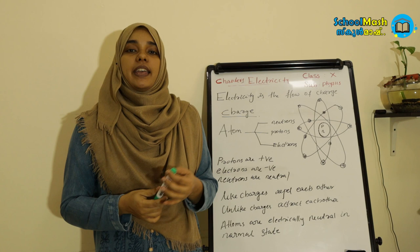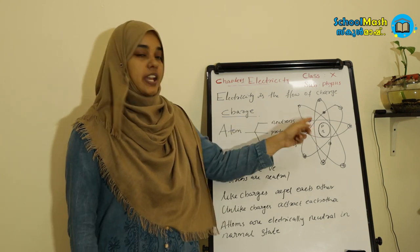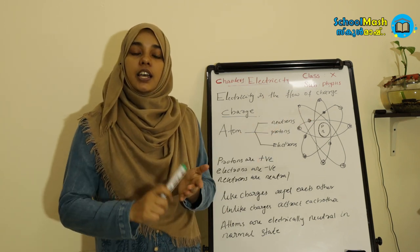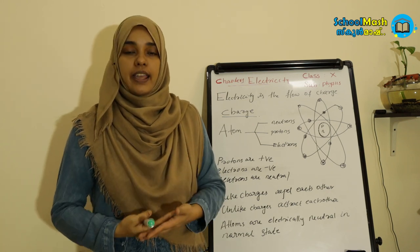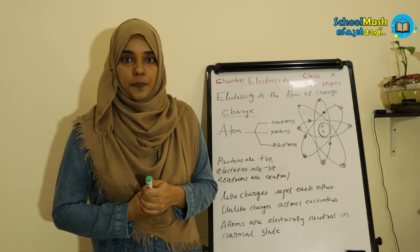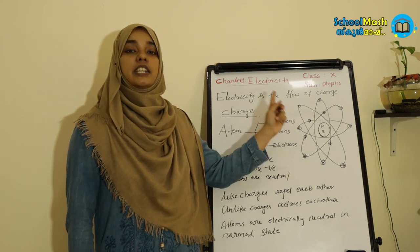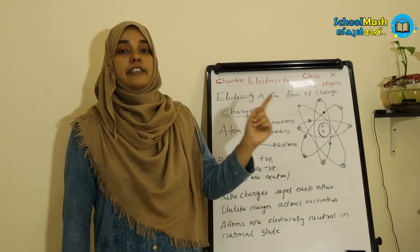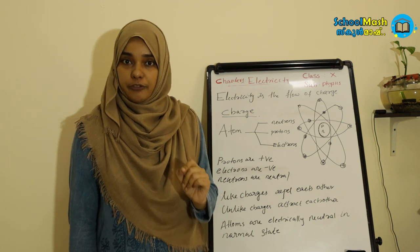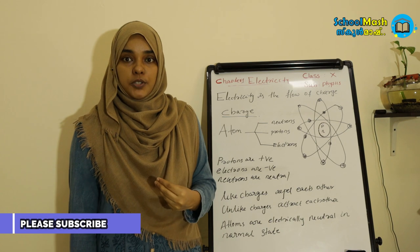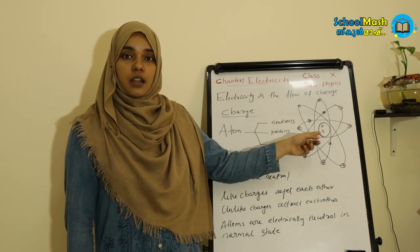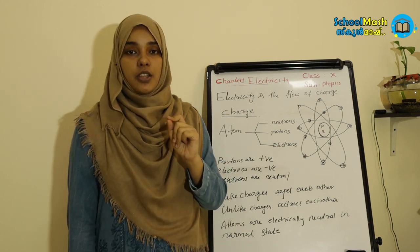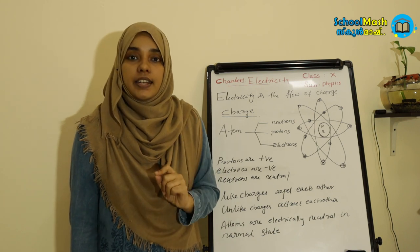Every external force breaks this force of attraction. When you break these orbitals, you can get a little bit of energy. That's why the electrons become free. Electricity is the flow of charge, and it occurs because of an external force that makes atoms unbalanced, leaving electrons free.